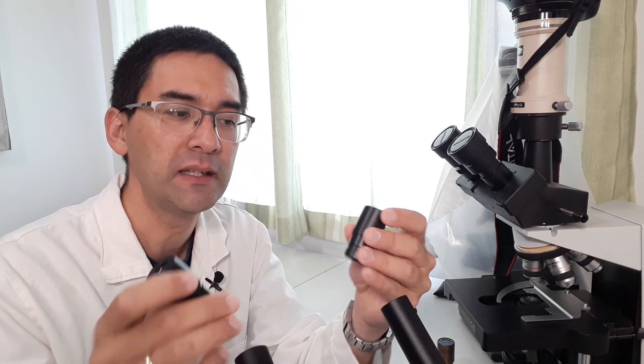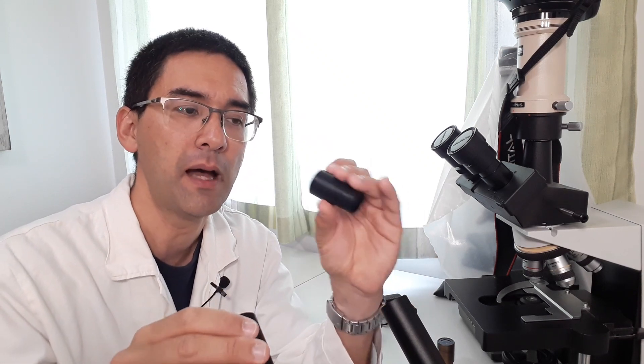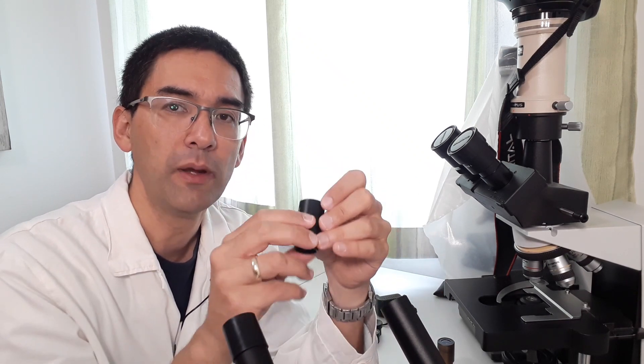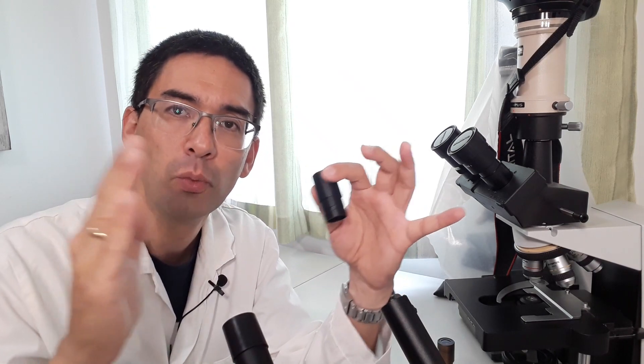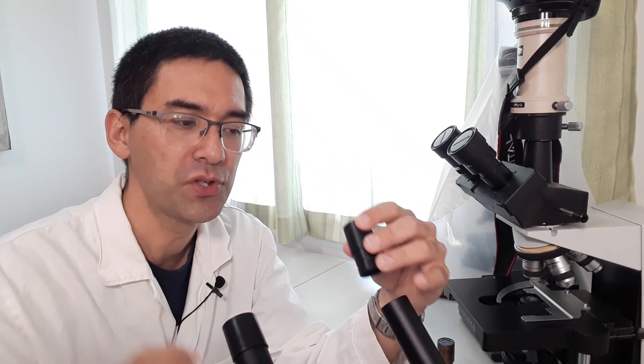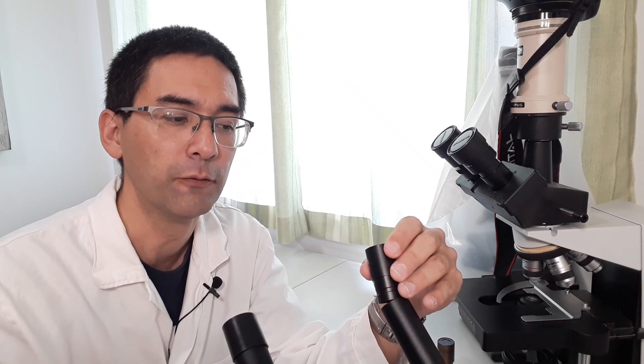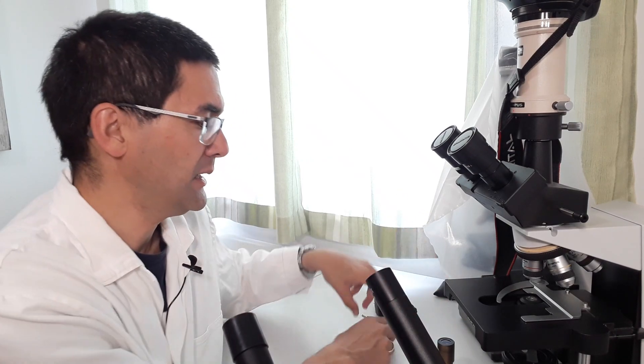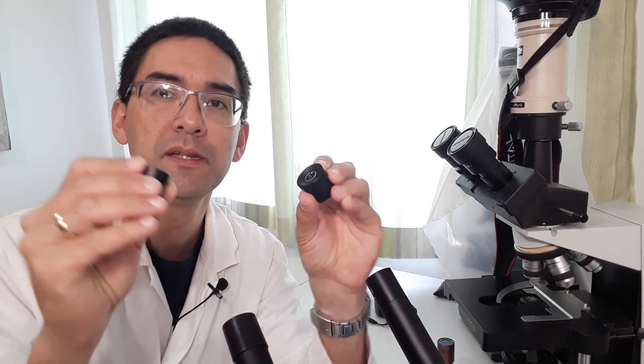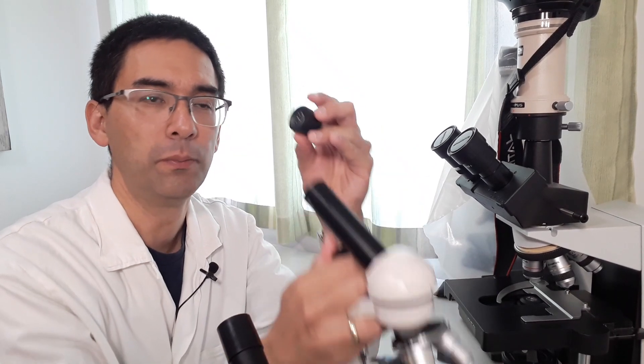But it is indeed like this that I checked it, that these eyepieces here from the Swift National Optical actually give you a sharper image all the way to the corners, to the borders. So I think the optical quality therefore is better. And it's also like this that the 25x eyepieces that come supplied, the one from this microscope here,